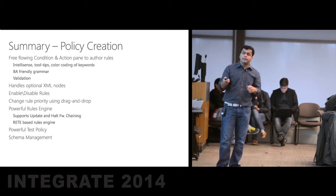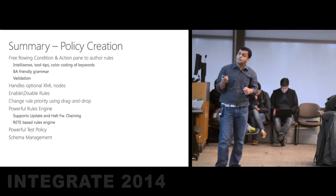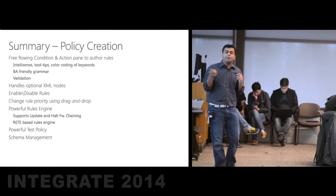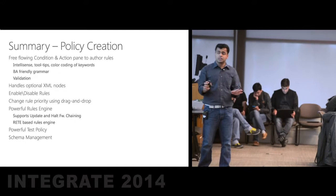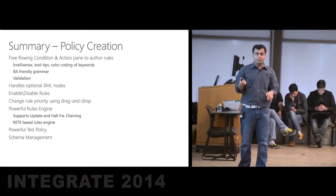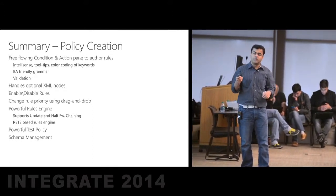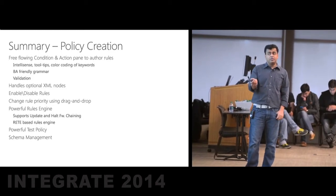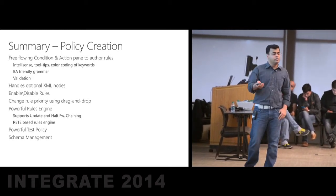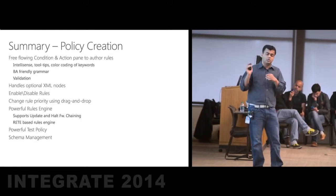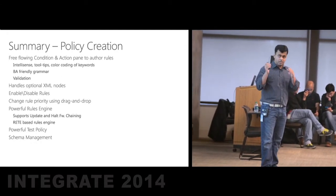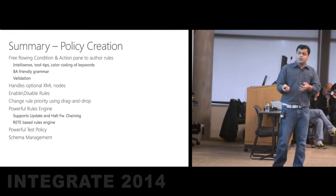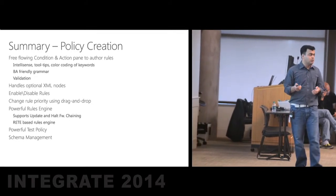We'll have a very powerful rules engine supporting forward chaining, and the update and halt keywords. Update is reevaluating the entire rule set; halt is stop evaluating all rules. It's based on the Rete rules engine algorithm. We also have a very powerful test policy feature catered towards the business analyst, so they can go ahead and test the policy in a unit testing fashion. And of course, schema management to handle all the uploaded schemas.